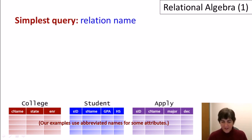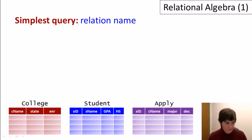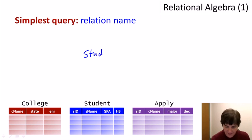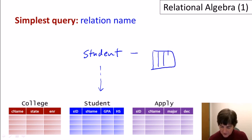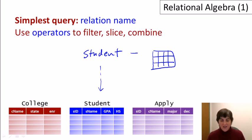The simplest query in relational algebra is simply the name of a relation. For example, writing 'student' is a valid expression in relational algebra, and running it returns a copy of the student relation. From there, we use operators of the relational algebra to filter relations, slice relations, and combine relations.